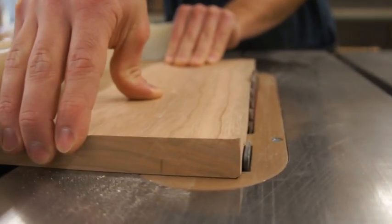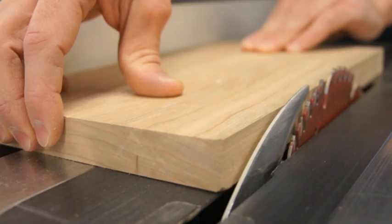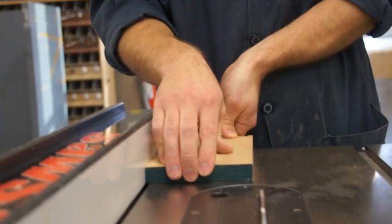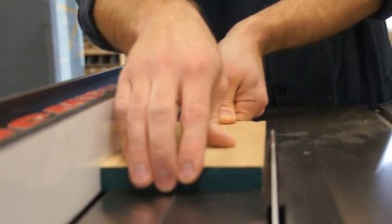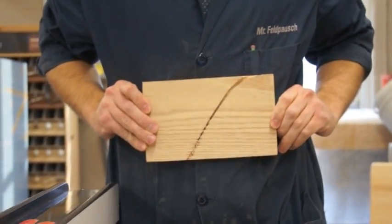The splitter or riving knife helps to prevent table saw kickbacks. The most common accident on the table saw occurs when the user allows the board to come away from the fence while ripping, causing kickback.